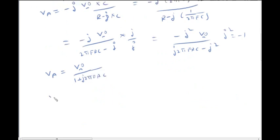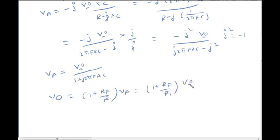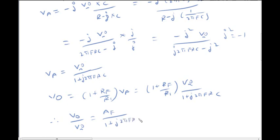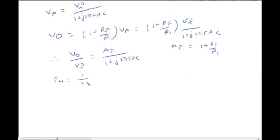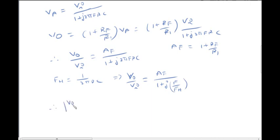So V0 equals (1 plus RF by R1) into VA. Substituting VA: V0 equals (1 plus RF/R1) times VI, divided by 1 plus j times f by fh. This gives the transfer function of the first-order low-pass filter, where the magnitude of V0/VI equals Af divided by the square root of 1 plus (f/fh) squared.